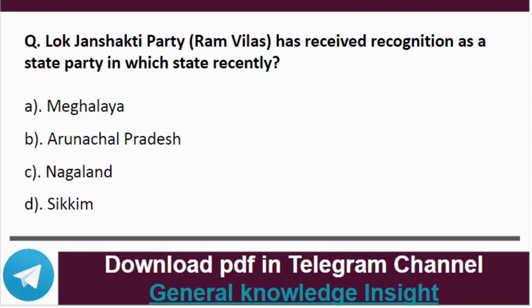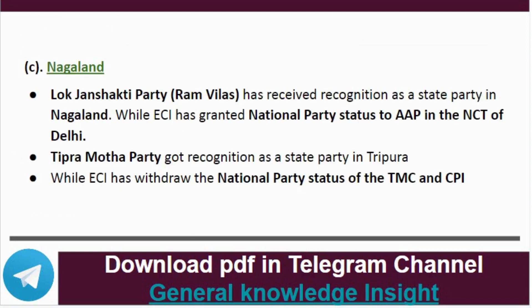Question 1: Log Jan Shakti Party Ram Vilas has received recognition as a state party in which state recently? The correct answer is option C, that is Nagaland. Log Jan Shakti Party Ram Vilas has received recognition as a state party in Nagaland, while the Election Commission of India has granted national party status to AIMIM party in the NCT of Delhi. The Brahmanda party got recognition as a state party in Tripura, while the Election Commission of India has withdrawn national party status from the DMC and CPI.